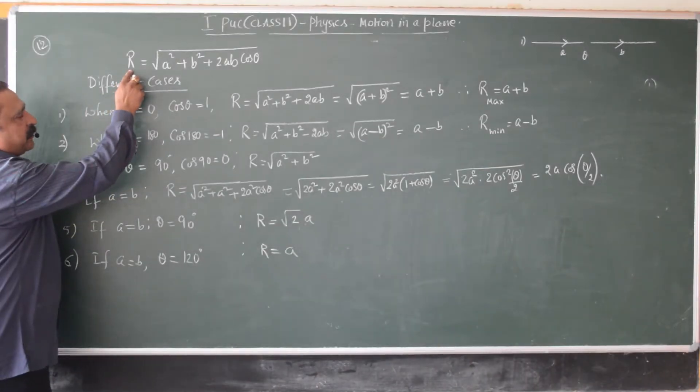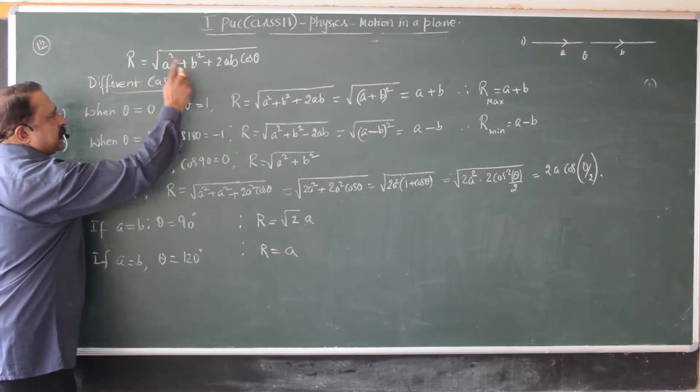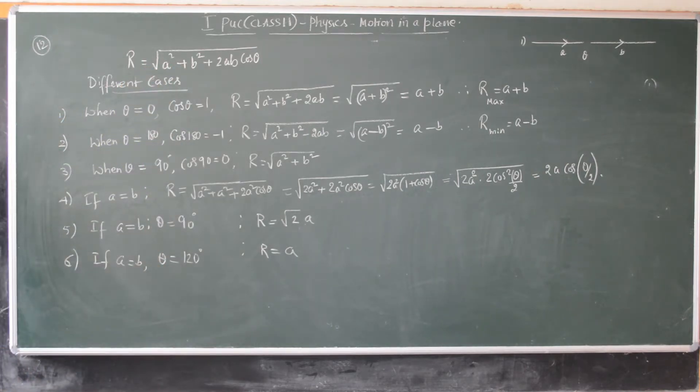Just now we have derived the expression for the resultant of two forces acting at a point. R is square root of a squared plus b squared plus 2ab cos theta. In applying the value of the resultant, we have different cases.